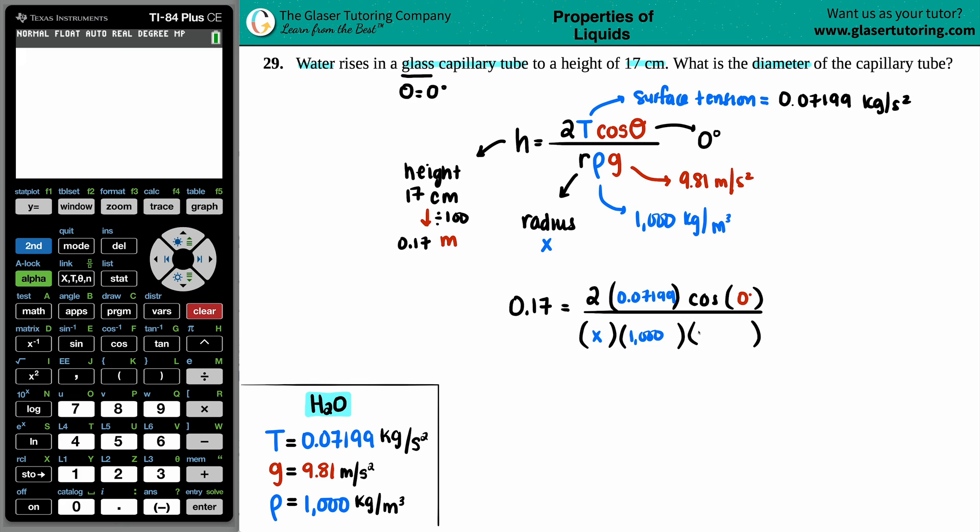Okay, so where do we go from here? Well, this one looks like just a big cross multiplication. I could take the 0.17 and multiply it by the whole denominator on the bottom, and then I could just simplify the top by just multiplying the two times the 0.07199 times the cosine of zero. So let's go for it: 0.17 times a thousand times nine point eight one.